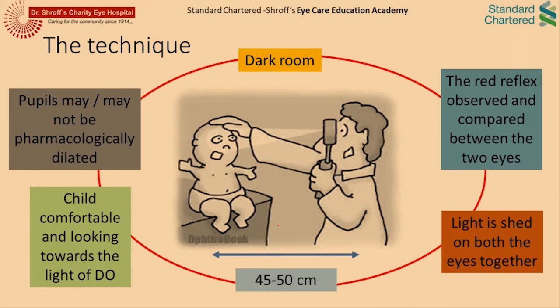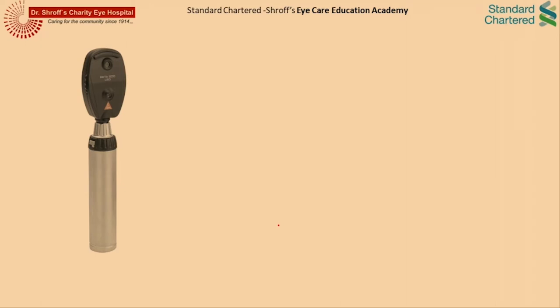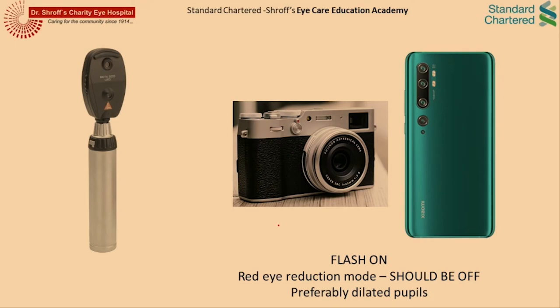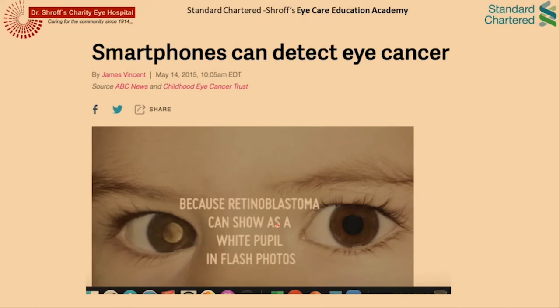While this technique was first described using a direct ophthalmoscope, do not be disheartened if you do not have one. In today's world, it can be easily captured by a simple camera or, more conveniently, a smartphone. One has to make sure that the flash is on and the red eye reduction mode is off while using a smartphone to capture a red reflex. Also, the reflex is captured better if the pupils are dilated. Smartphones have been appreciated for their ability to capture the red reflex and detect eye cancers.